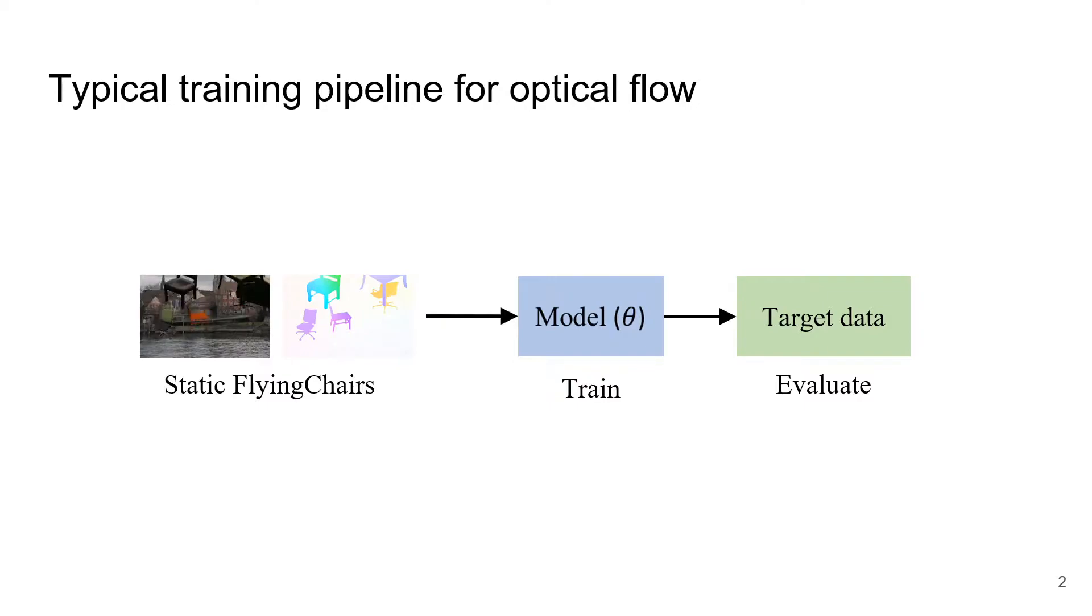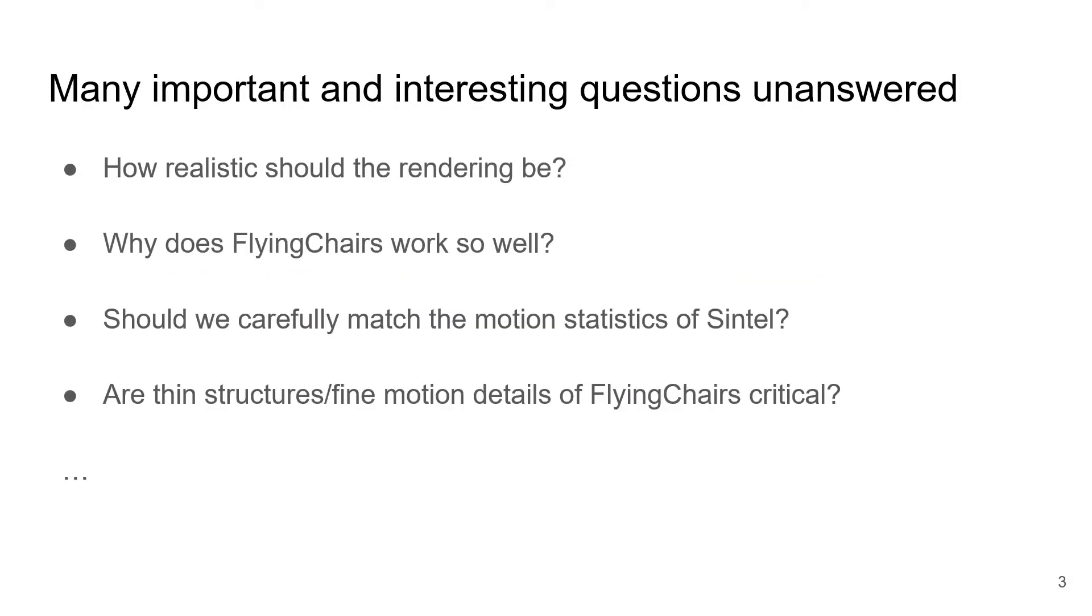All top-performing models currently follow this pipeline to pre-train models. Although the flying chairs dataset works well, there are many important and interesting questions left unanswered. For example, how realistic should the rendering be? What makes flying chairs work so well? Is it because flying chairs carefully matches the motion statistics of Sintel? Or is it because flying chairs contains a lot of thin structures and fine motion details?